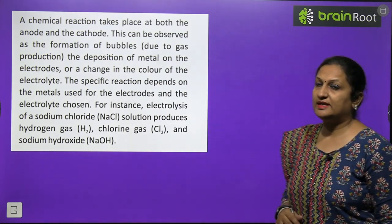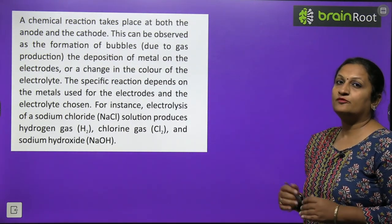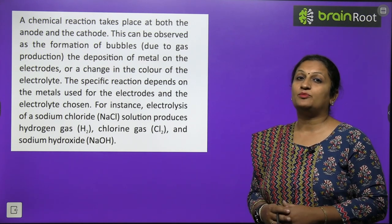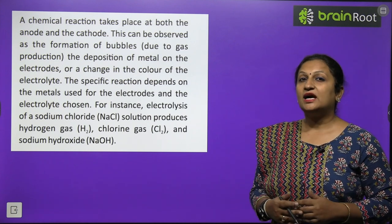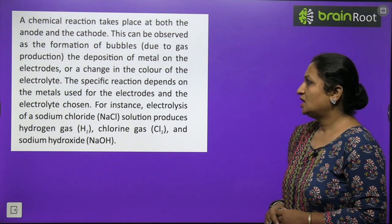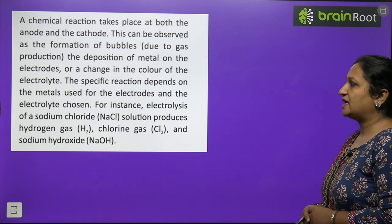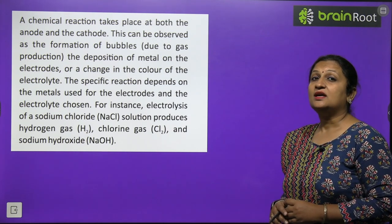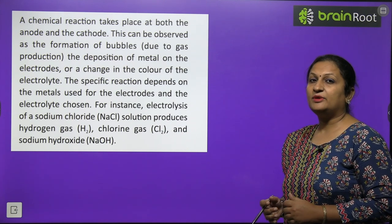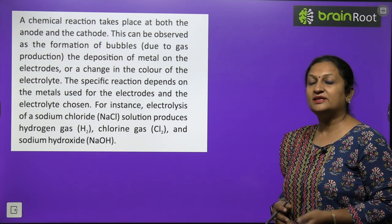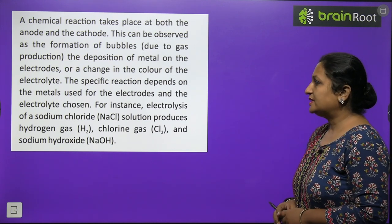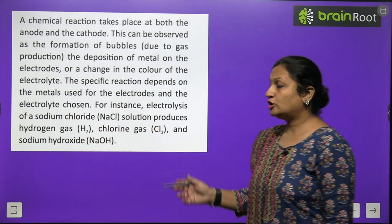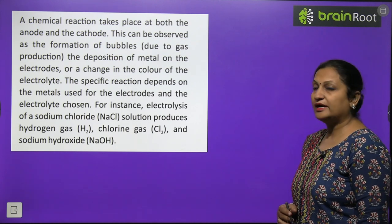A chemical reaction takes place at both the anode and cathode. This can be observed in the form of bubbles, or metal deposition on one electrode, or a change in the color of the electrolyte. The specific reaction depends on the metal used as the electrode and the electrolyte chosen. For example, electrolysis of sodium chloride solution produces hydrogen gas, chlorine gas, and sodium hydroxide.